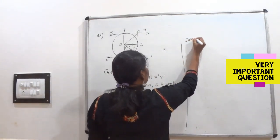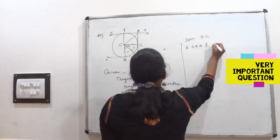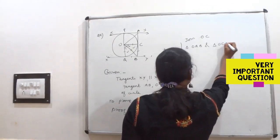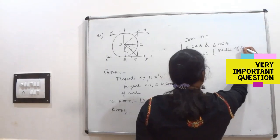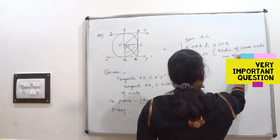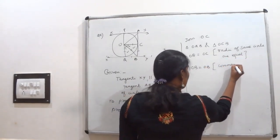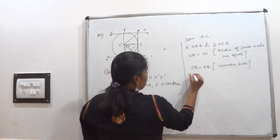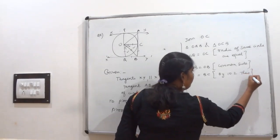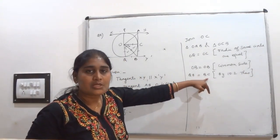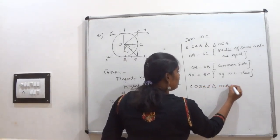So here we can write: Join OC. Then take triangle OQB and triangle OCB. In that, OQ equal to OC by radii of same circle are equal. Then OB equal to OB, common side in both triangles. Then QB equal to BC by theorem 10.2, length of the tangents from an external point to a circle are equal. So by triple S, both are congruent.